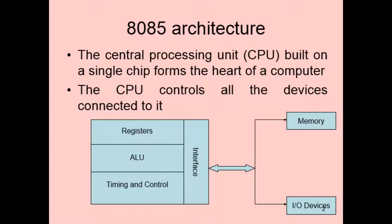Today let us talk about the architecture of the Intel 8085 microprocessor. The central processing unit is built on a single chip and forms the heart of the computer. The CPU controls all connected devices. A microprocessor consists of registers, which are memory locations, an ALU (arithmetic and logic unit), and a timing and control unit.